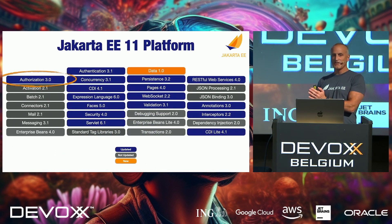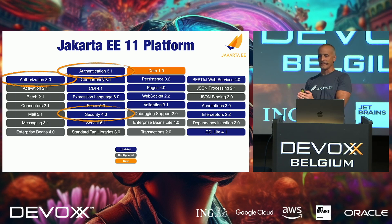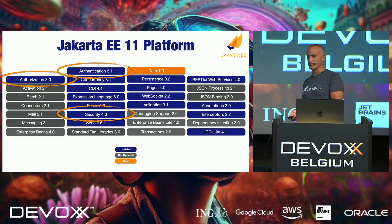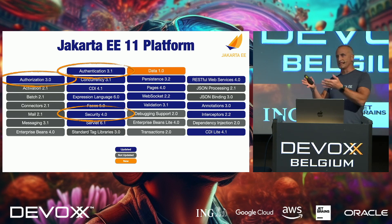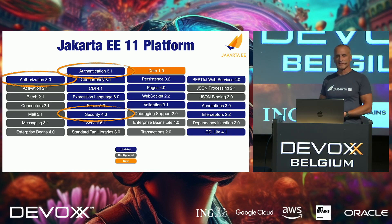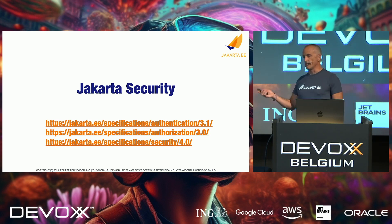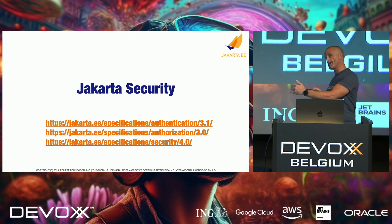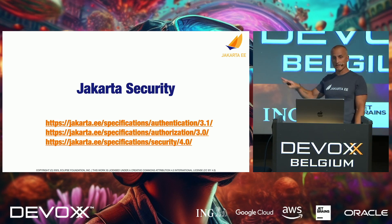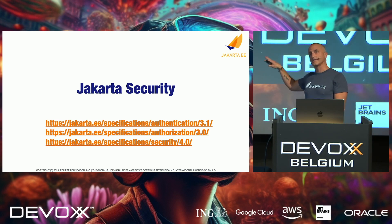Let's go through the specifications and look at the updates. Security is actually three specifications: Authorization, Authentication, and the Security API. As developers you're probably more familiar with the Security API; the others are more SPIs used to implement the features. Jakarta Security can be found at jakarta.ee/specifications followed by the short name and version number — that's the URL structure for all specifications.